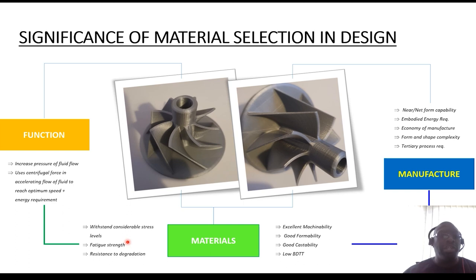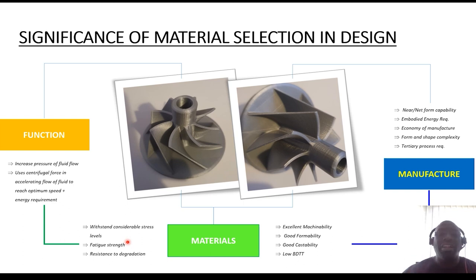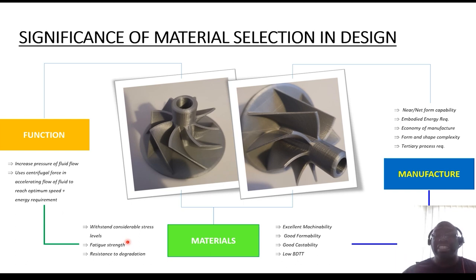There's also another dimension to this: the material that you select for any component has a bearing on its manufacturability. The manufacturing process required to manipulate the material from its primary supply form to the finished product needs to be considered, and that will be dictated by the material that you choose. You also need to look at other mechanical characteristics relating to the machinability of the material. Excellent machinability will be something that needs to be considered, because that will tell you what subtractive manufacturing processes are available.